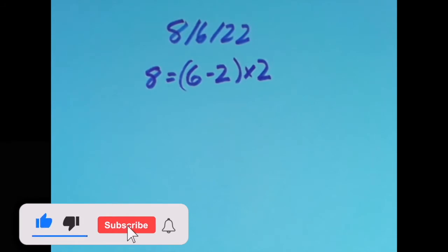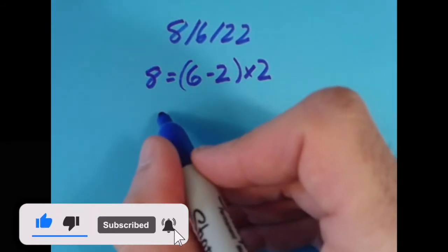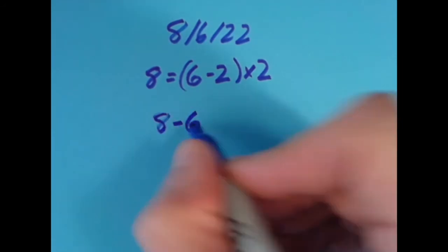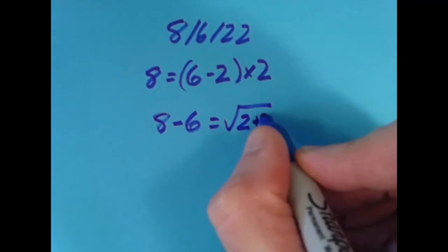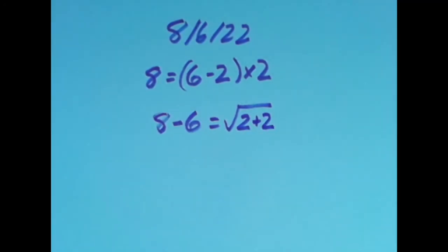I then tried it a couple other ways. I moved the equal sign around a little bit so I moved it to the right one spot and here I said that 8 minus 6 which is 2 is the same thing as the square root of 2 plus 2. So 2 plus 2 is 4 and the square root of 4 is 2 so that also works.